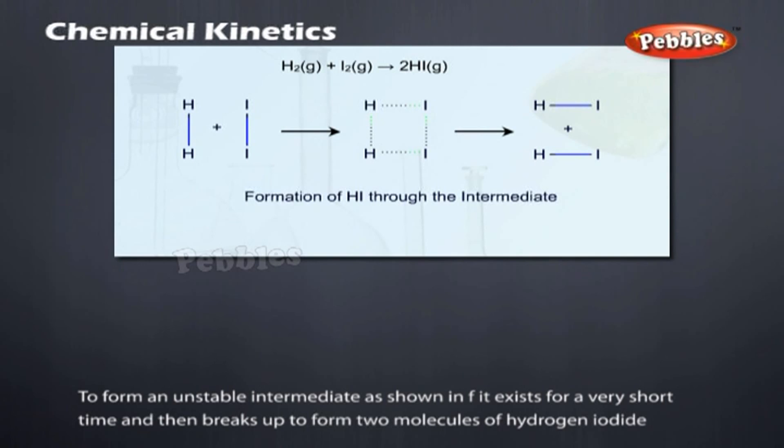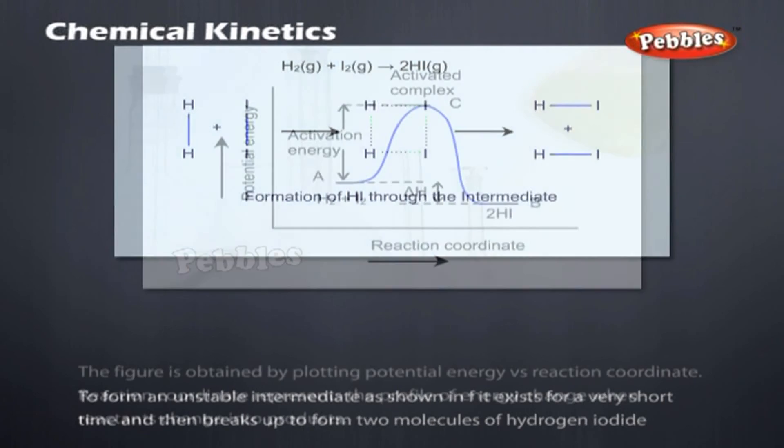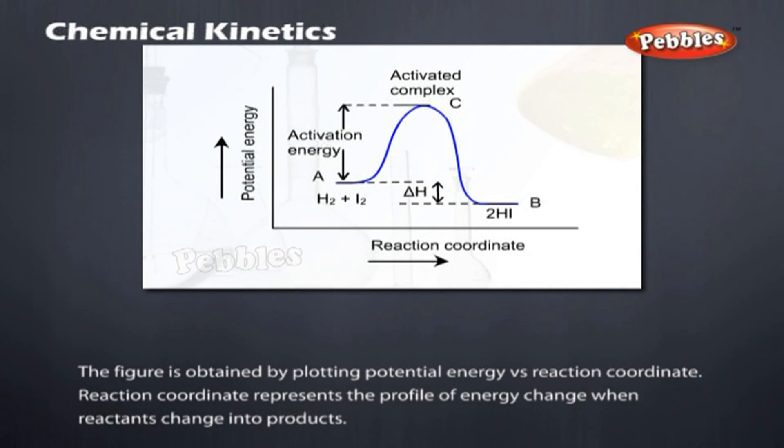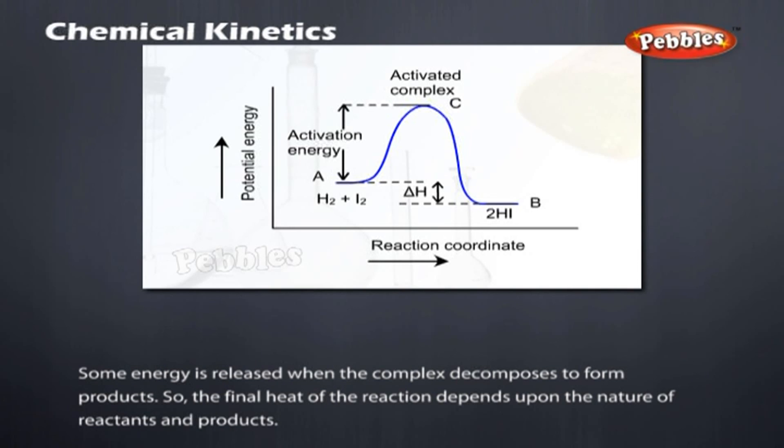According to Arrhenius, this reaction can take place only when a molecule of hydrogen and a molecule of iodine collide to form an unstable intermediate. It exists for a very short time and then breaks up to form two molecules of hydrogen iodide. The figure is obtained by plotting potential energy versus reaction coordinate. Reaction coordinate represents the profile of energy change when reactants change into products. Some energy is released when the complex decomposes to form products. So, the final heat of the reaction depends upon the nature of reactants and products.